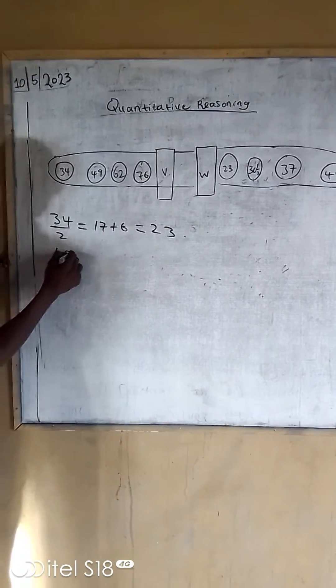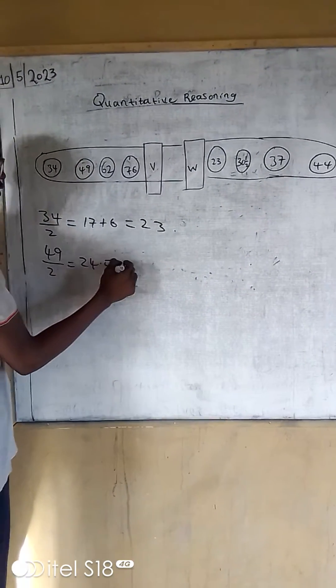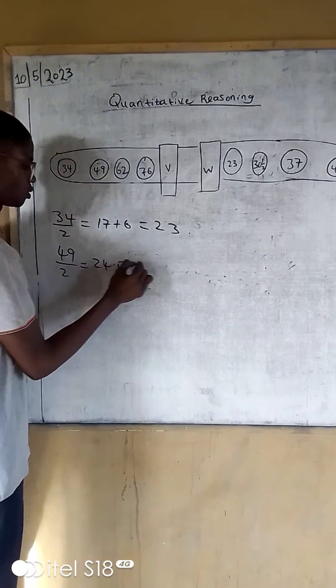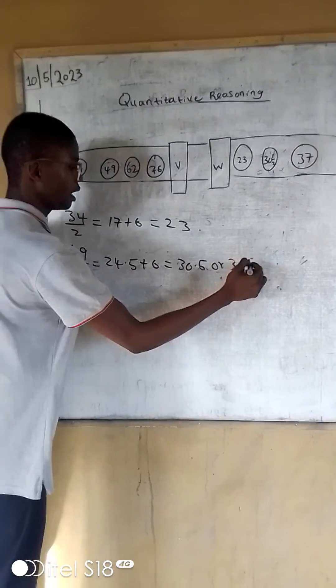Then for the second one, we have this divided by 2, which is 24.5, which plus 6 will give you 30.5.